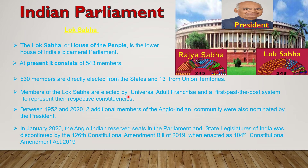Members of the Lok Sabha are elected by universal adult franchise and a first-past-the-post system to represent their respective constituencies. Between 1952 and 2020, two additional members of the Anglo-Indian community were also nominated by the President. In January 2020, the Anglo-Indian reserved seats in the parliament and the state legislatures of India was discontinued by the 126th Constitutional Amendment Bill of 2019.